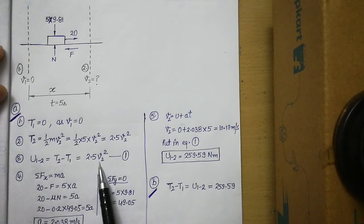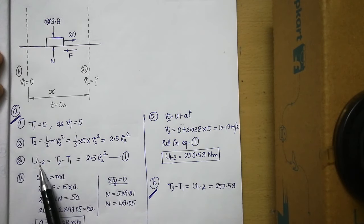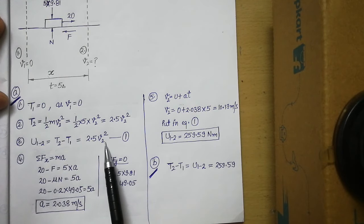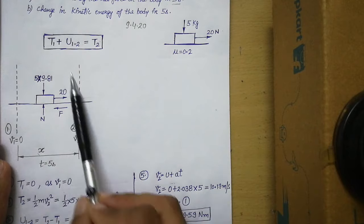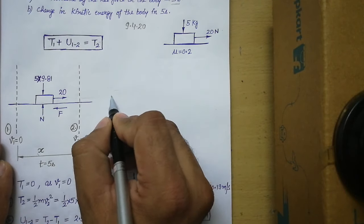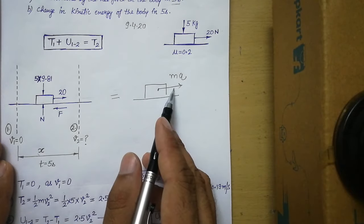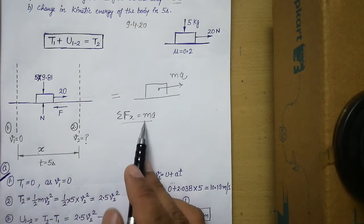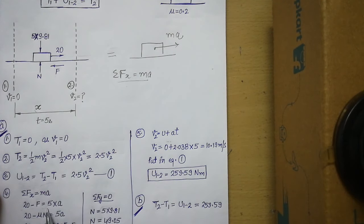The final velocity v₂ is still unknown, so we must find it first before we can get the work done by the net force in five seconds. The block is under the effect of forces and moving towards the right, so we can apply Newton's second law: summation F equals ma. The forces in the x-direction are the 20 Newton pull and the friction force, so: 20 minus F_friction equals 5a.